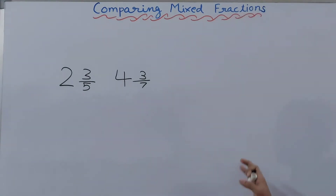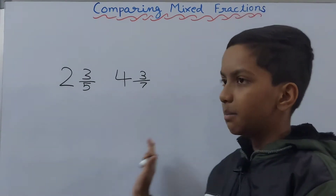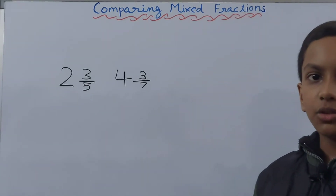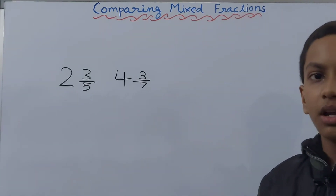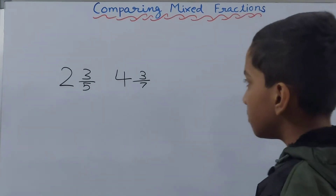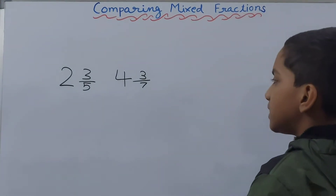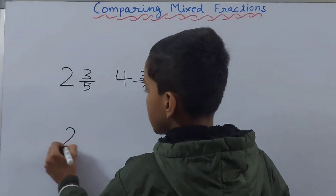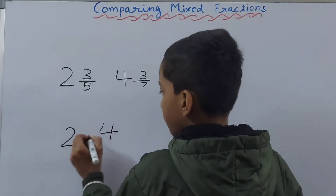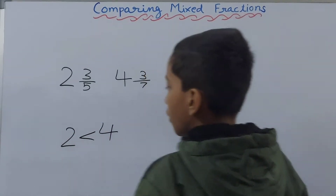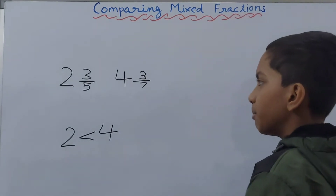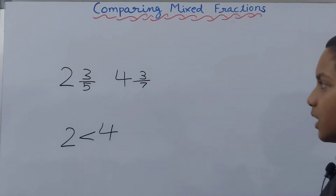Whenever you are comparing mixed fractions, your first step is to compare your whole numbers. Here the whole numbers are two and four. Four is greater than two, and now the comparison is done.